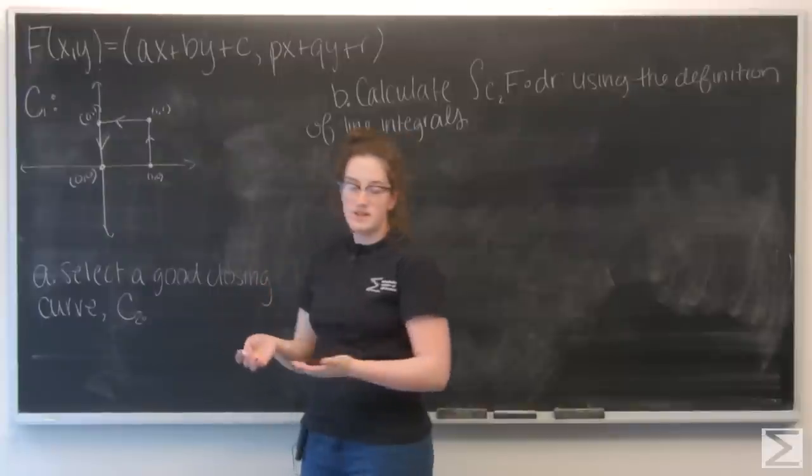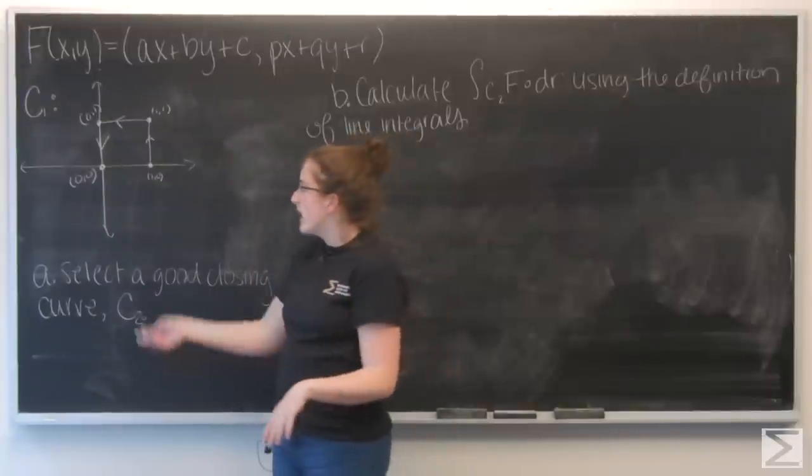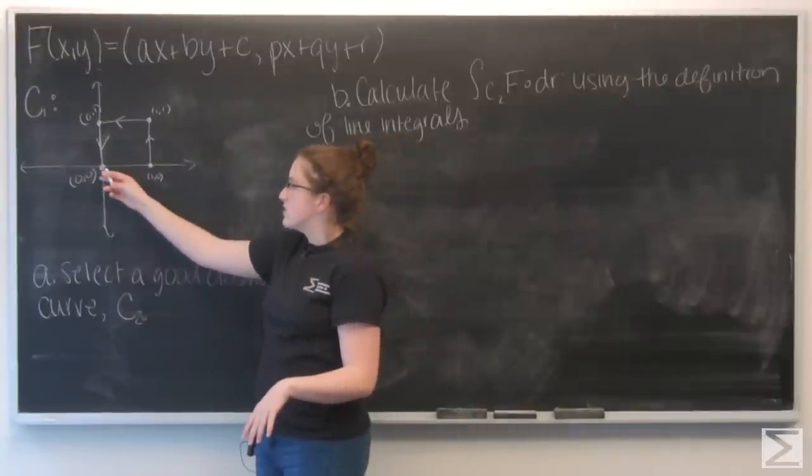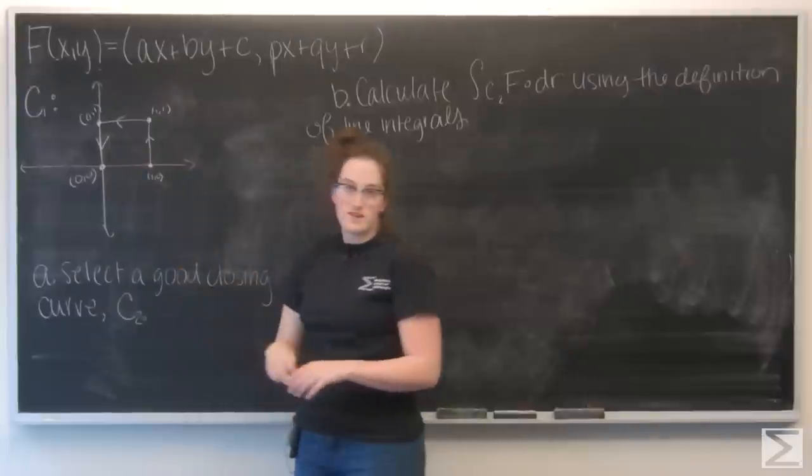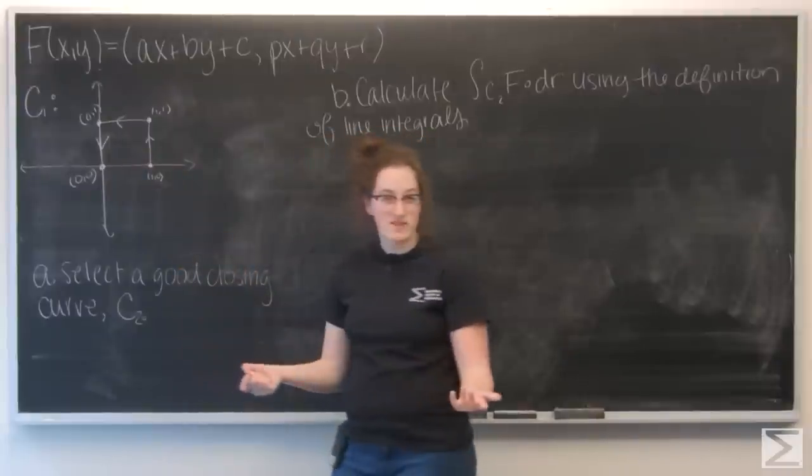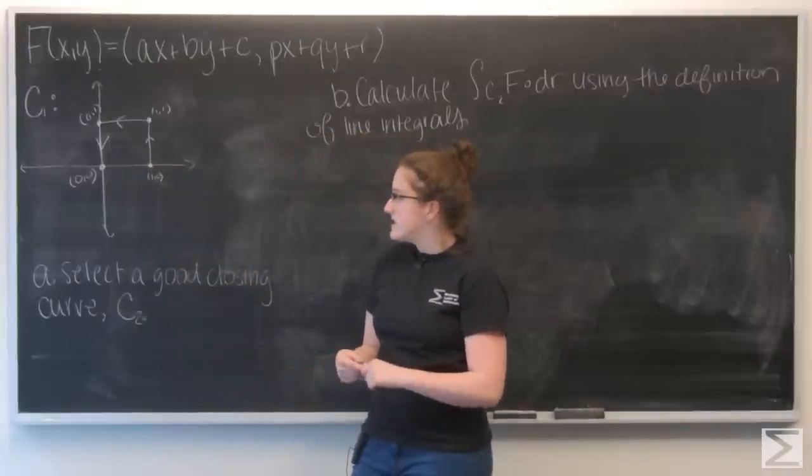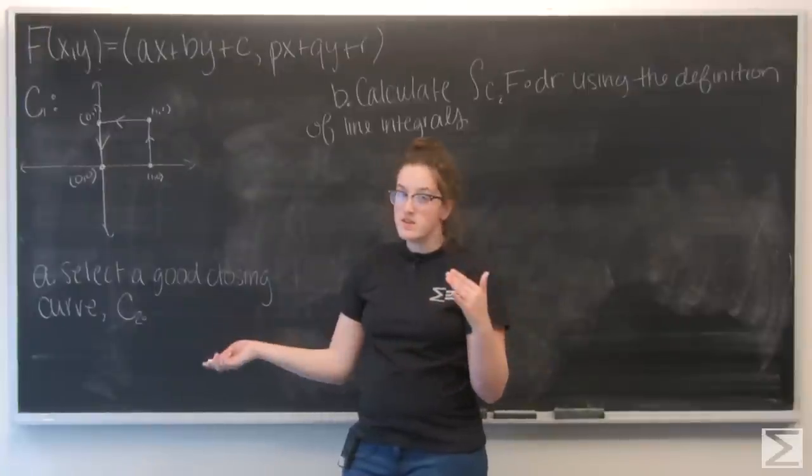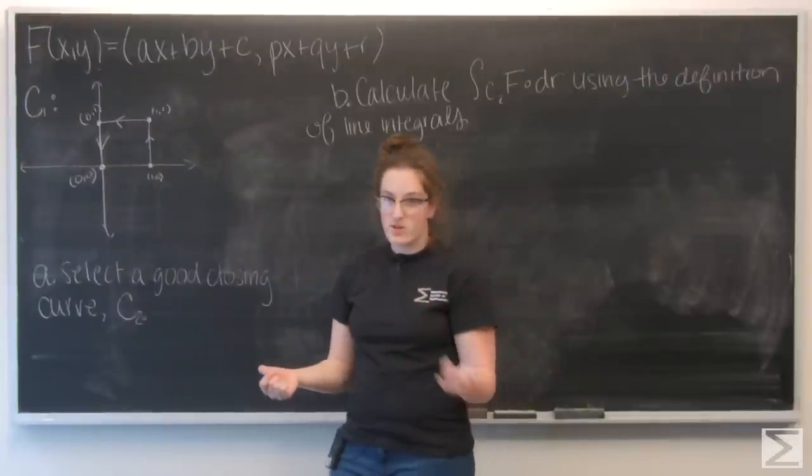The easiest way to do it is to make a square. So I want to add in a section that goes from the point (0,0) to (1,0). And to do that, let's parametrize it. I'm going to say that it is (t, 0), and t can go between 0 and 1.